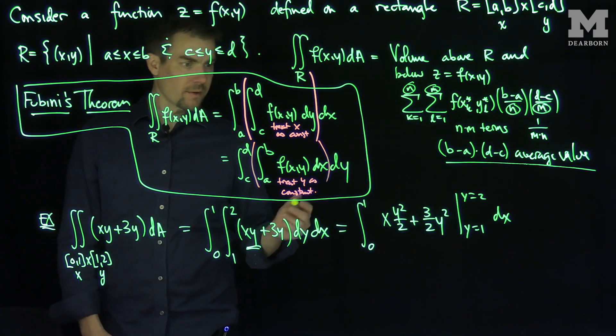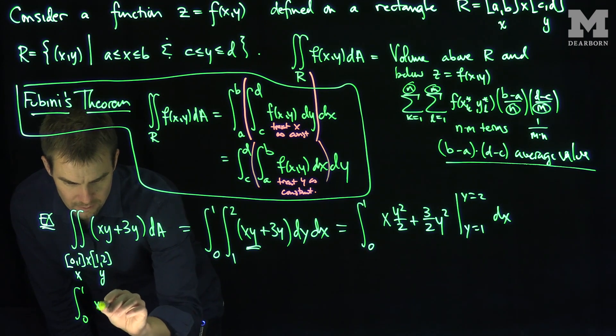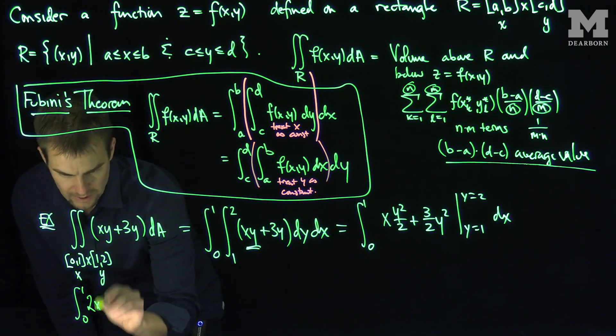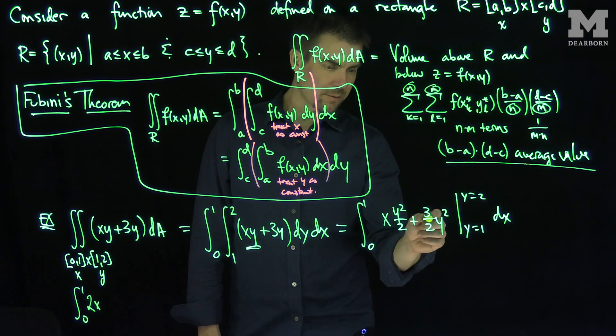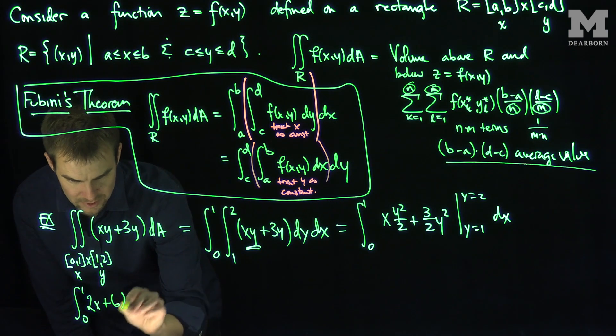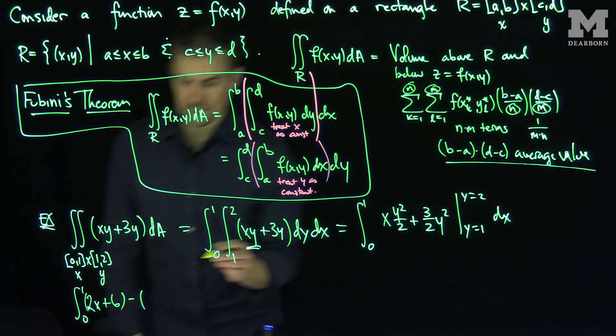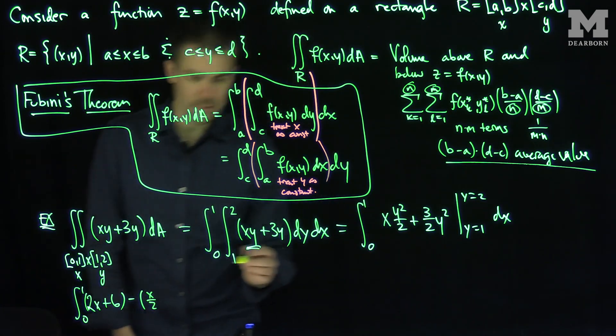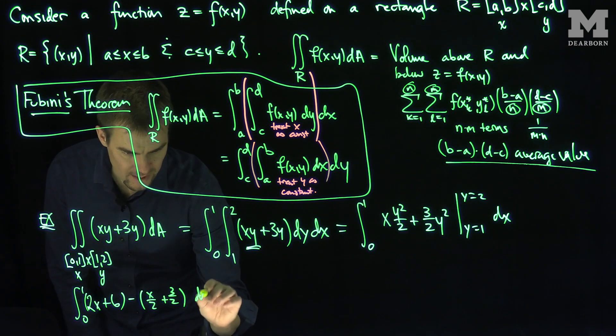And so if we were to plug in these limits, what will I have? I'm going to have the integral from 0 to 1 of x. When I plug in y equals 2, this is going to turn into a 2, so that's going to be 2x. When I plug in 2 over here, I'm going to have 4 times 3 halves, that's going to be plus 6. So 2x plus 6 is my first thing. And from that, I'm going to subtract when y is equal to 1, so that's going to be x over 2, and then when I plug in 1 over here, I'm going to have 3 over 2, so plus 3 over 2 dx.